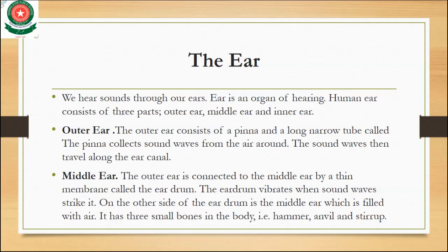First is the outer ear. The outer ear consists of a pinna and a long narrow tube called the ear canal. The pinna collects sound waves from the air, and these sound waves travel through the ear canal, and then we can hear any sound.